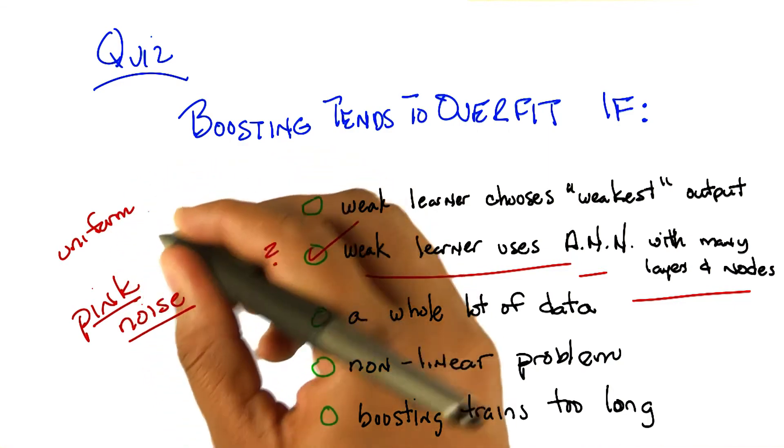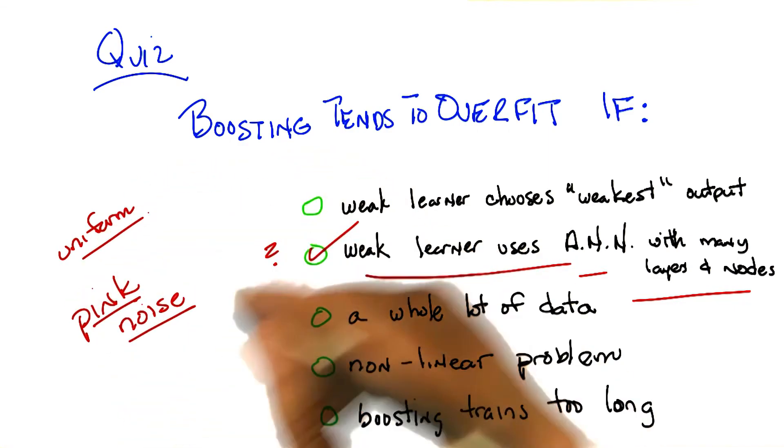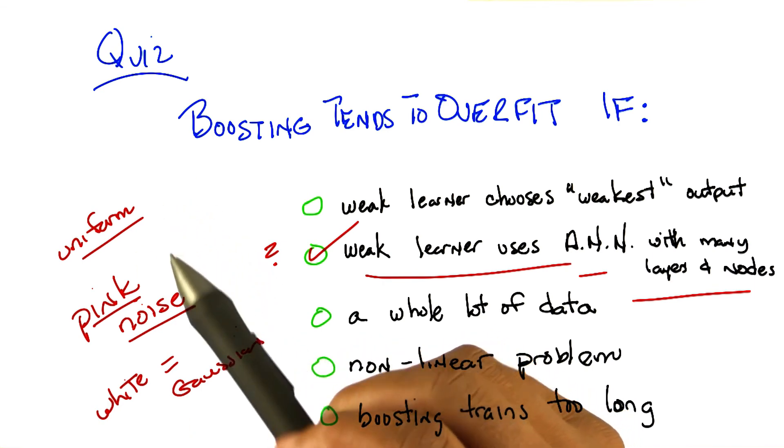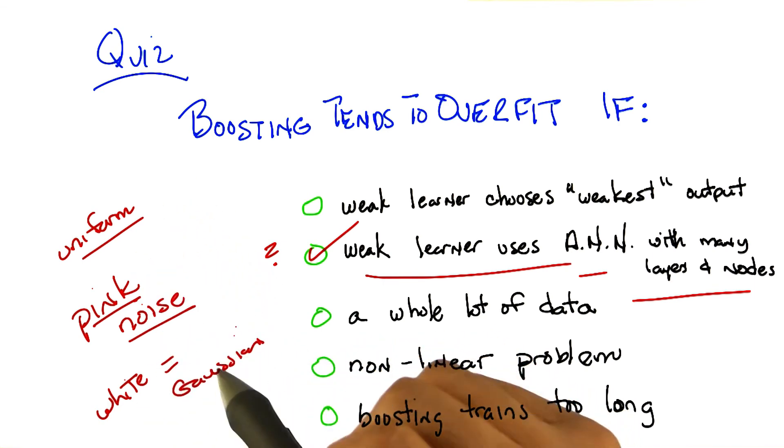So pink noise just means uniform noise. I thought white noise was uniform noise. No, white noise is Gaussian noise. Okay, so pink noise is uniform noise and white noise is Gaussian noise.